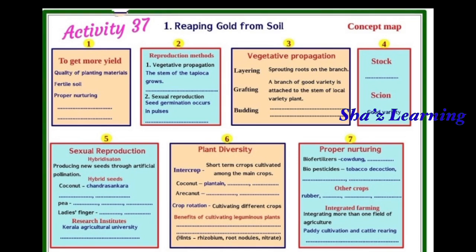Next, reproduction methods. There are two types of reproduction methods. One is vegetative propagation, and the second one is sexual reproduction. In vegetative propagation, the new plant grows from the root, stem, or leaf of the parent plant.